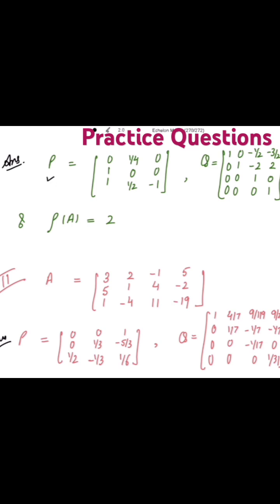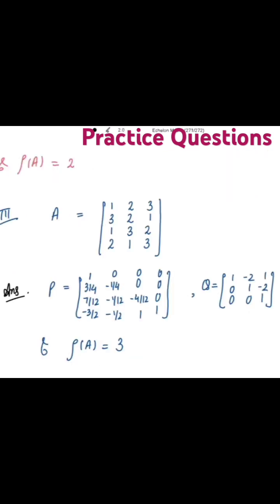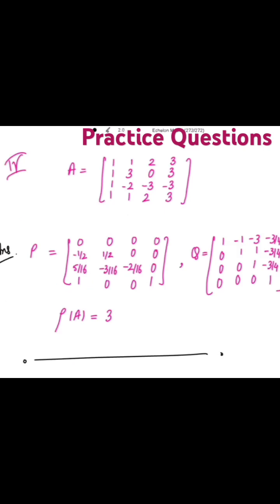The non-singular matrices P and Q for the green matrix have rank of A equal to 2. Try to solve these exercises. The red color matrix is also given with its answer — the non-singular matrices P and Q with rank of A equal to 2. Then there is another blue colored matrix A with solutions, and lastly a pink colored matrix A — try to find out these solutions.